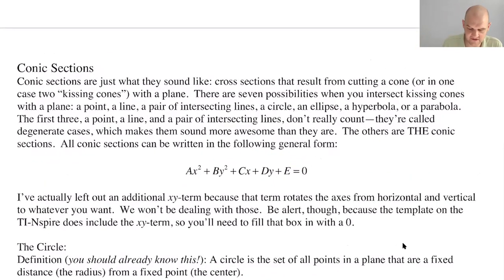And so you need to just know their names right now. So you can get a point, a line, a pair of intersecting lines. Those are called degenerate cases because they're not really parts of a conic section. They're not really parts of a cone. They're just like things that coincidentally showed up.